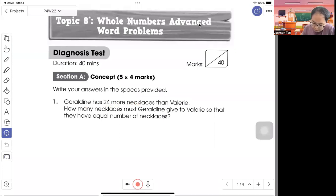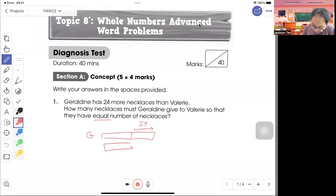Geraldine has 24 more necklaces than Valerie. How many necklaces must Geraldine give to Valerie so that they have equal number of necklaces? So in the model, Geraldine will have 24 more than Valerie. They want equal, so Geraldine, the extra 24 has to give half of it so they'll be equal. So 24 divided by 2, answer is 12.